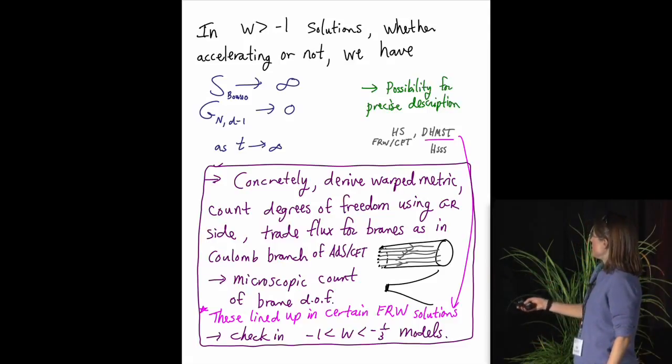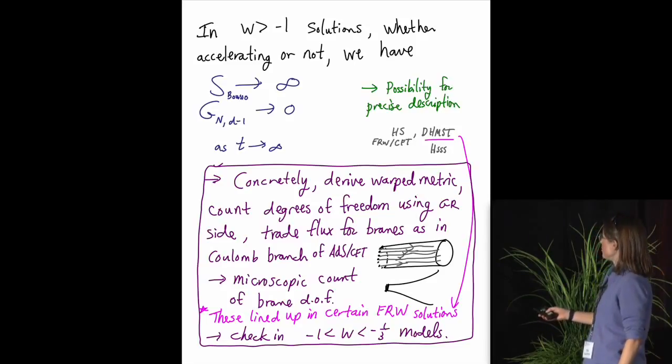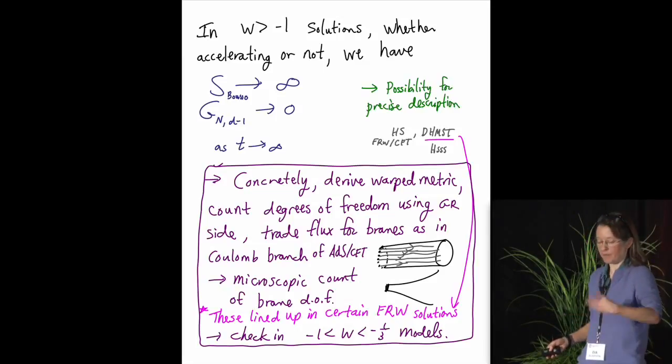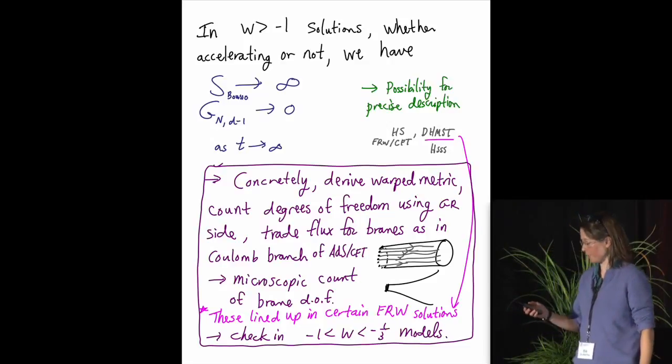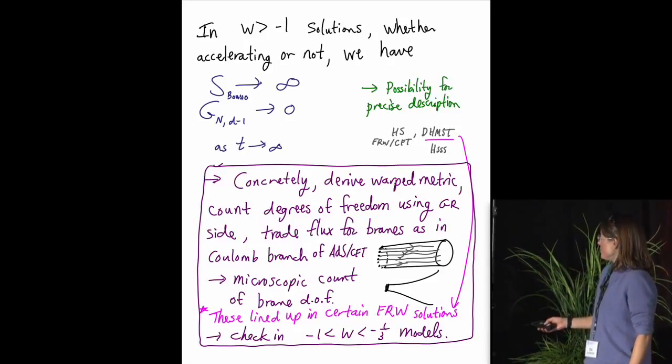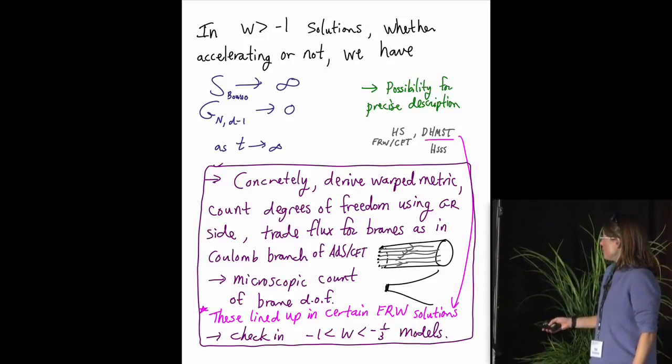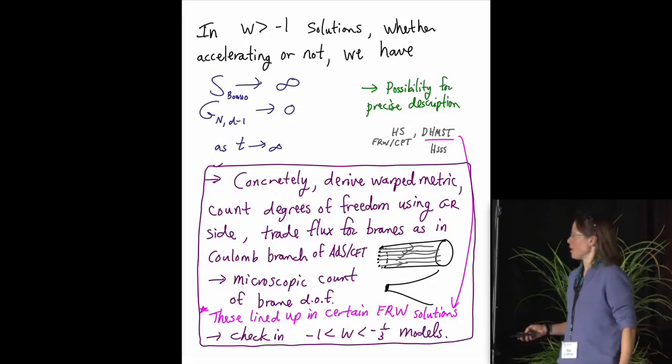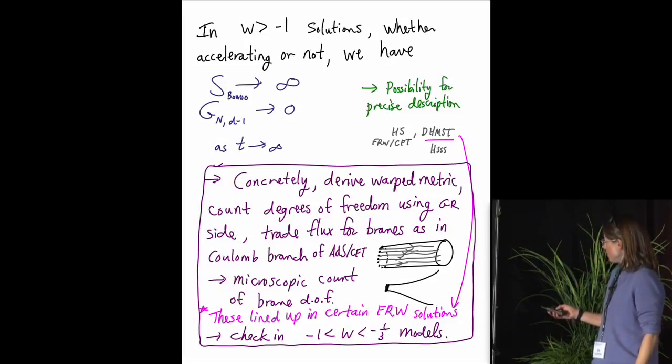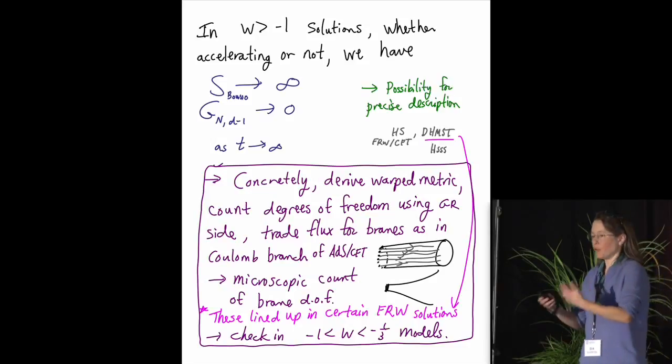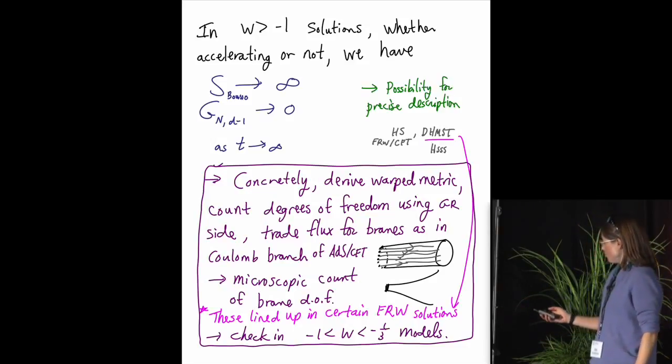So I think this is a very exciting opportunity to try and make precise. It's come up in other methods like the FRWCFT correspondence. And we have a rather concrete way of analyzing this using the explicit models of the sort that I mentioned. And in doing so in certain FRWCFT solutions as well as desider constructions, we find parametric agreement between microscopic and macroscopic counts of degrees of freedom, for example. So we plan to continue this study in more and more simple and accessible models of accelerated expansion such as the ones I just described.